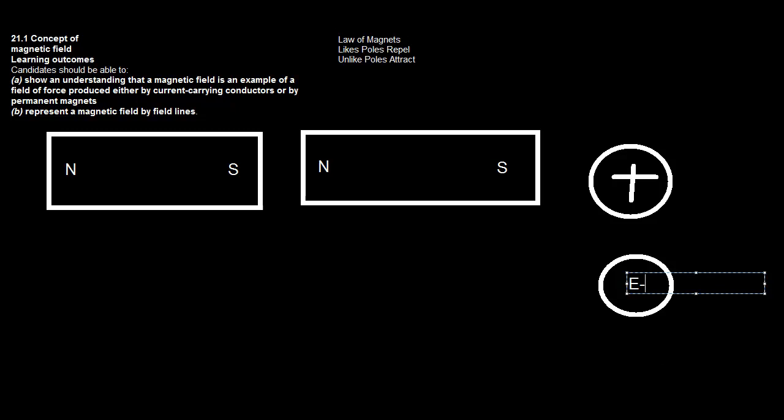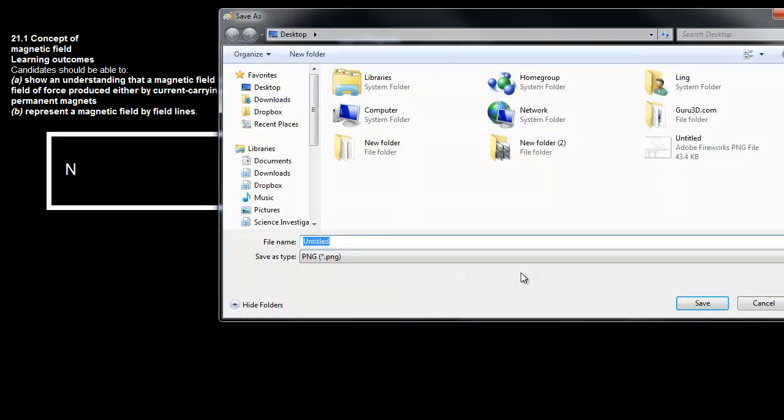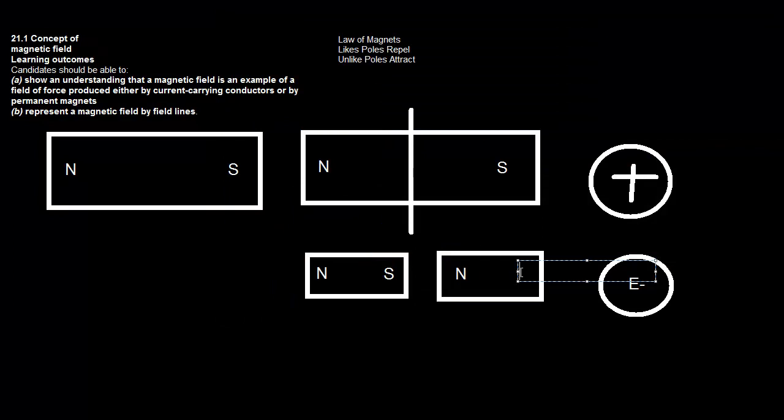And what's really interesting is if you go ahead and say chop this magnet in half, what you would expect is the north side to stay north and the south side to stay south. But what really happens is you end up with two magnets and both the magnets have a north and a south pole. Which is really quite interesting if you think about it.